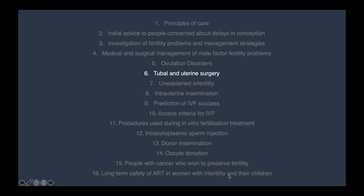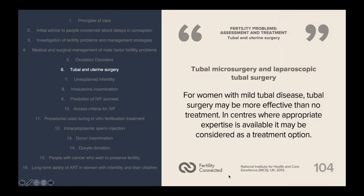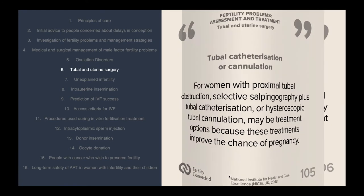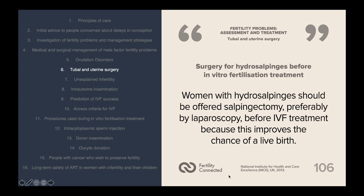Regarding tubal and uterine surgery as treatment options: for women with mild tubal disease, tubal surgery may be more effective than no treatment and may be considered where appropriate expertise is available. For women with proximal tubal obstruction, selective salpingography plus tubal catheterisation or hysteroscopic tubal cannulation may be treatment options, as these improve the chance of pregnancy. Women with hydrosalpinges should be offered salpingectomy, preferably by laparoscopy, before IVF to improve the chance of a live birth.